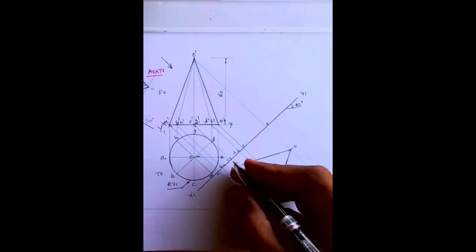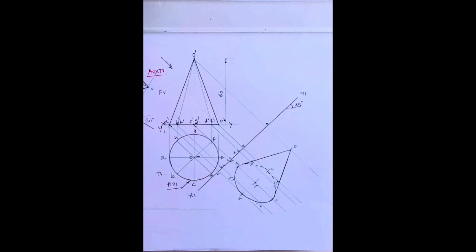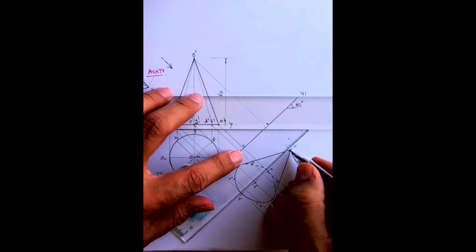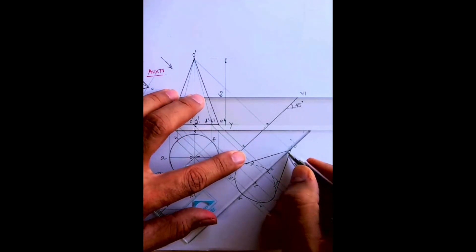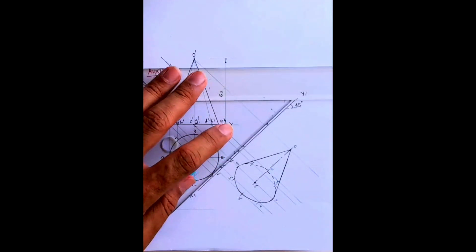M. So o to m would be axis. So this is auxiliary top view. I hope you people have understood. Thank you.